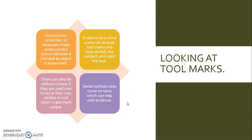Looking at tool marks: impressions, scratches, or abrasions made when contact occurs between a tool and an object is a tool mark. Evidence at a crime scene can include tool marks and help identify the suspect who used the tool. There can also be defects in tools if they are used many times, or they may oxidize or rust, which makes them unique. Serial numbers also come on tools, which can help with evidence.